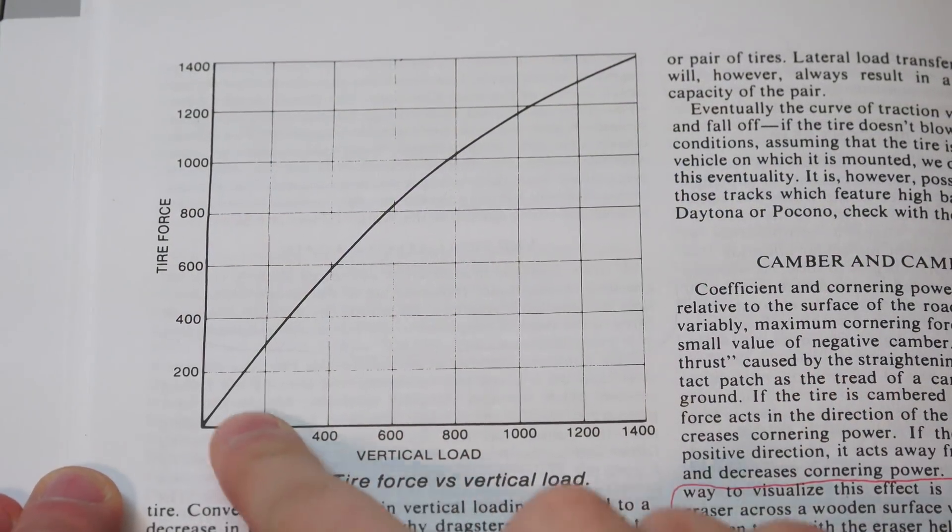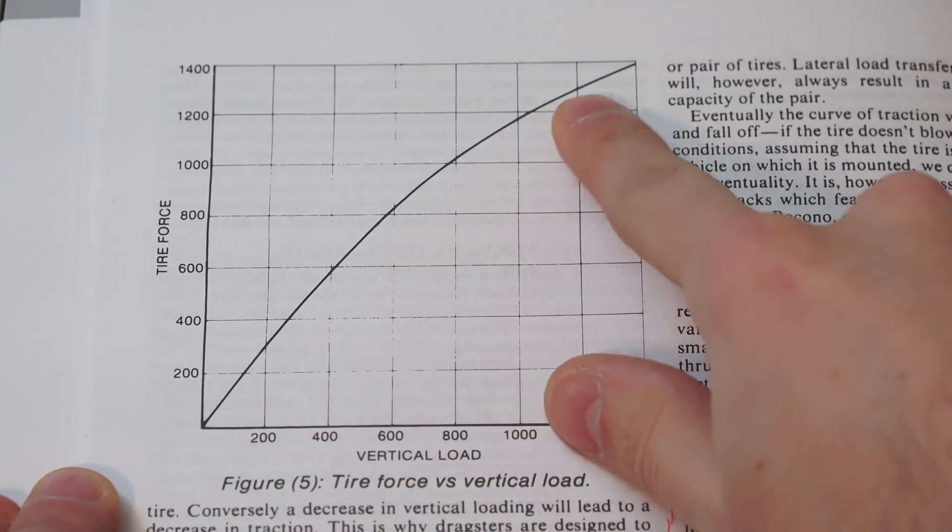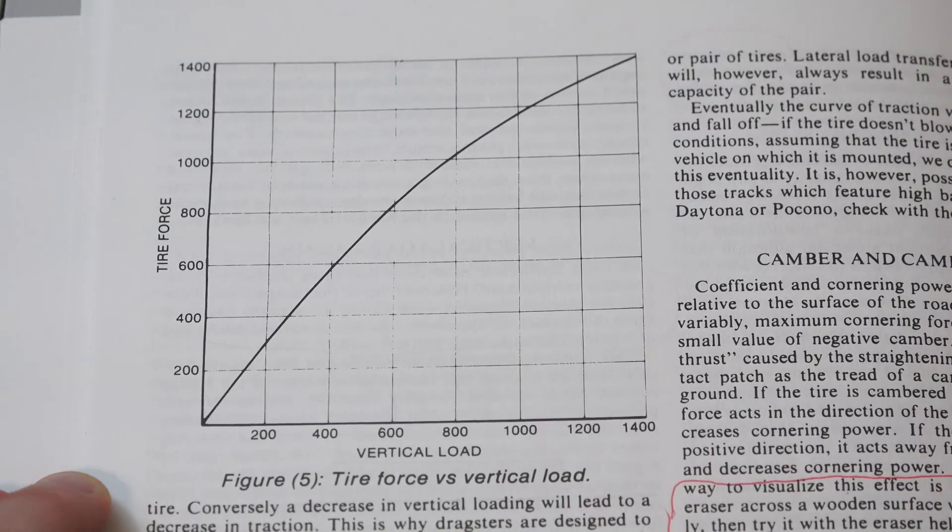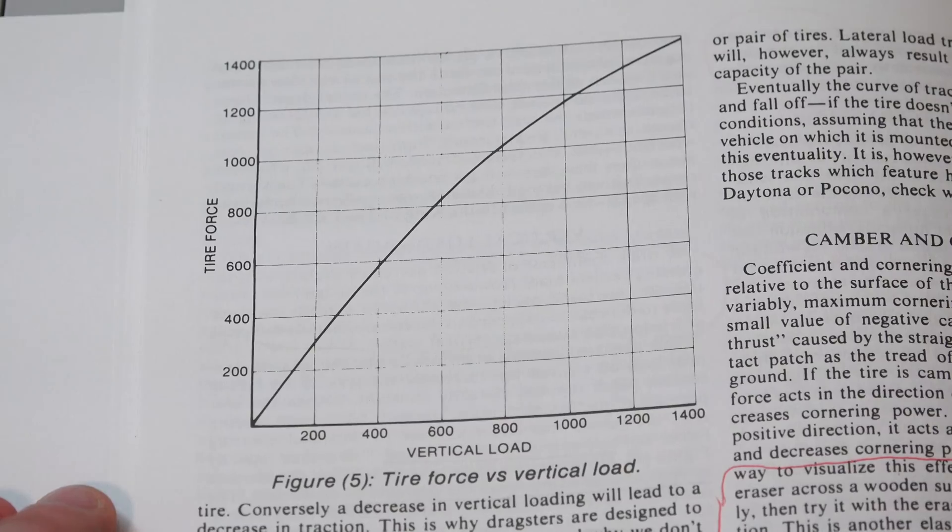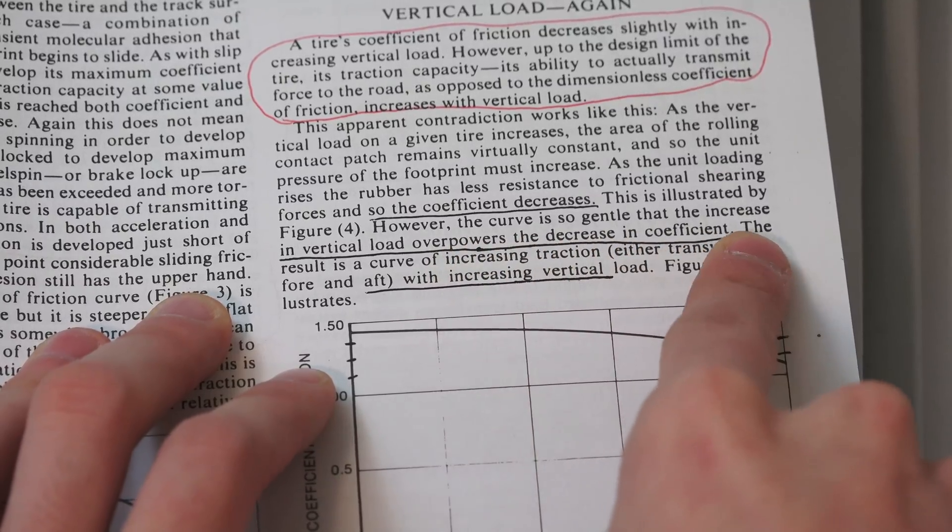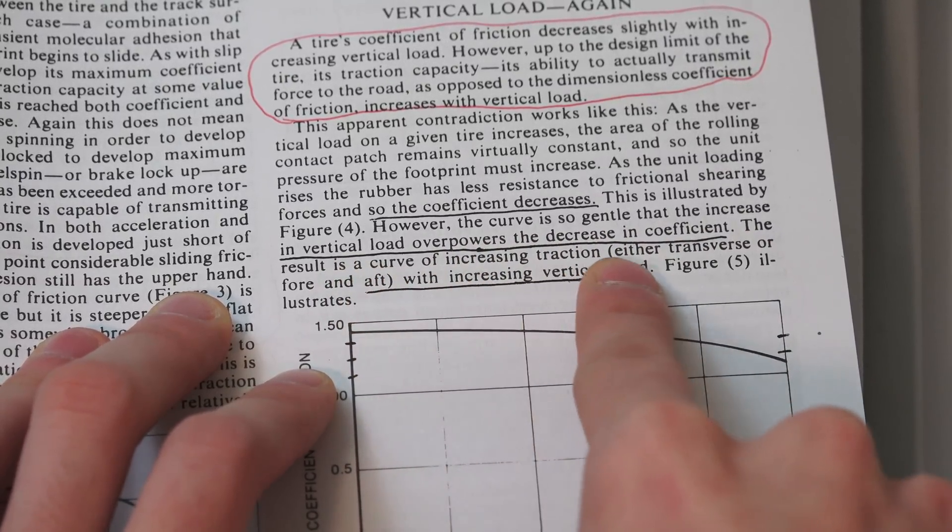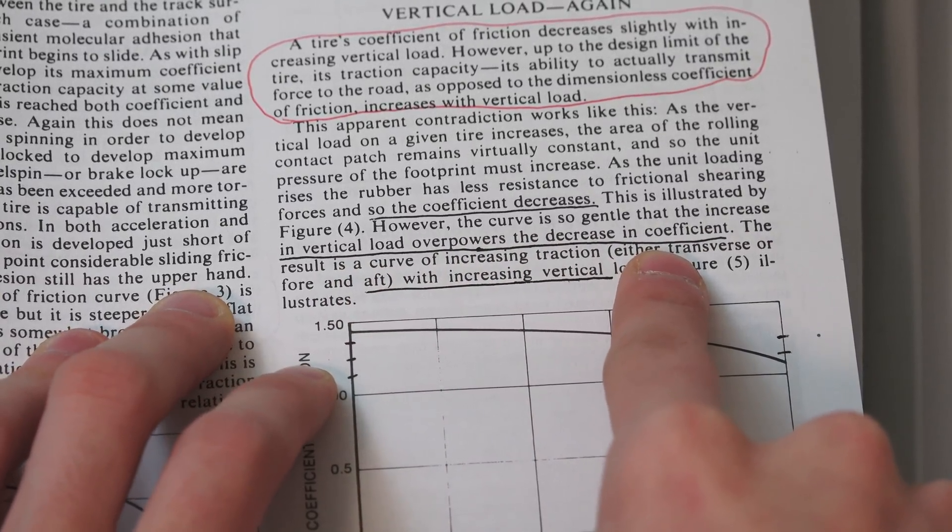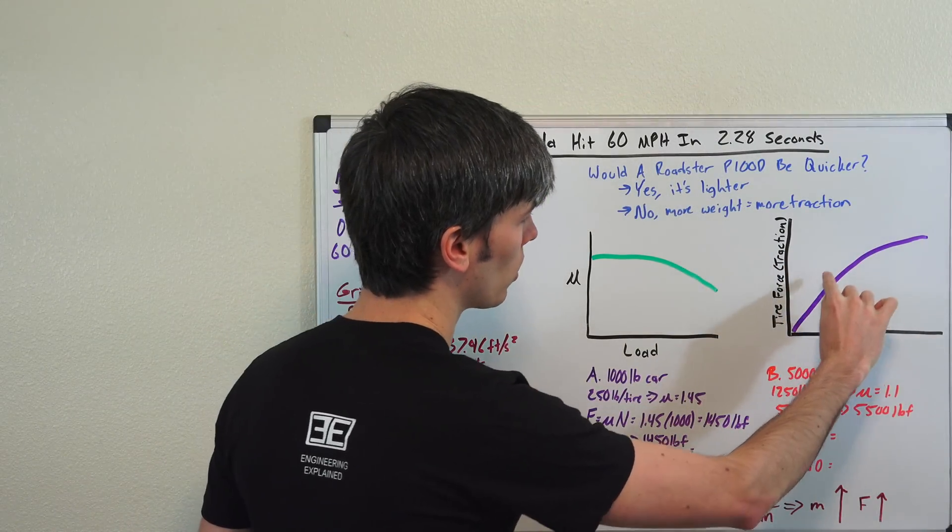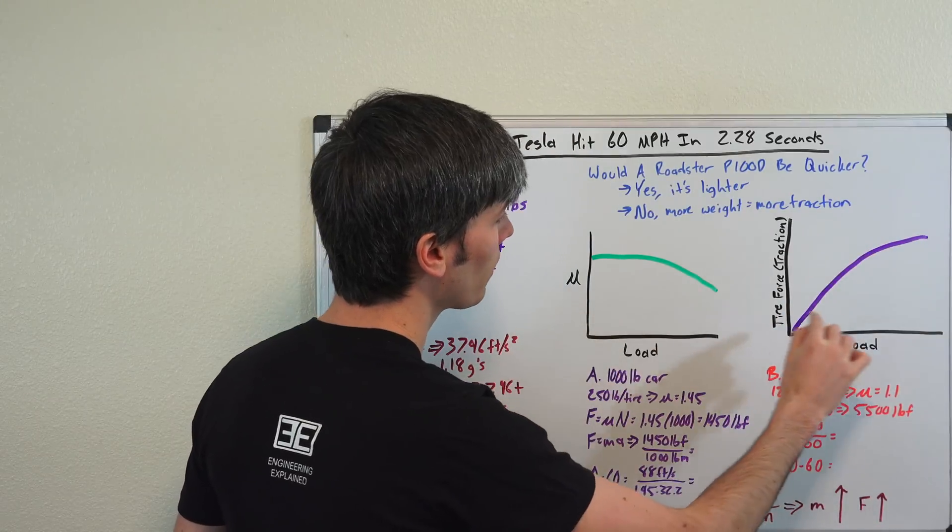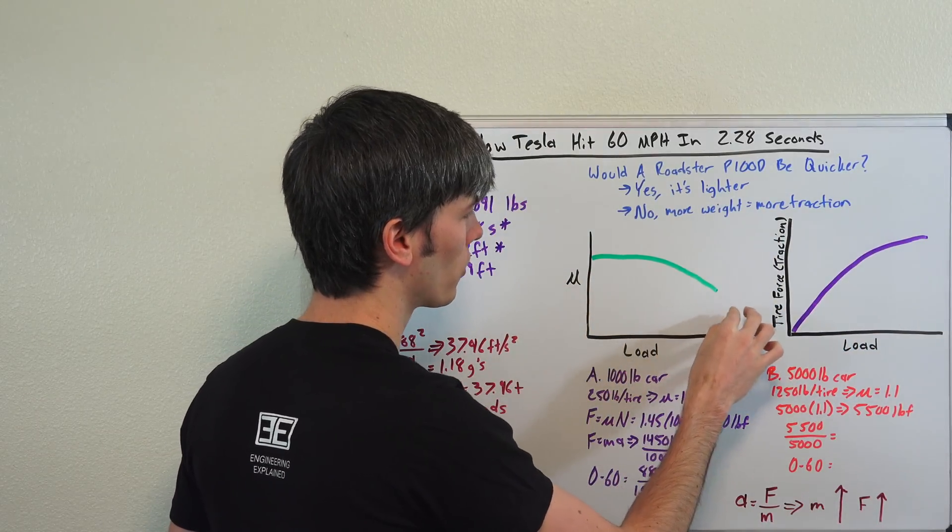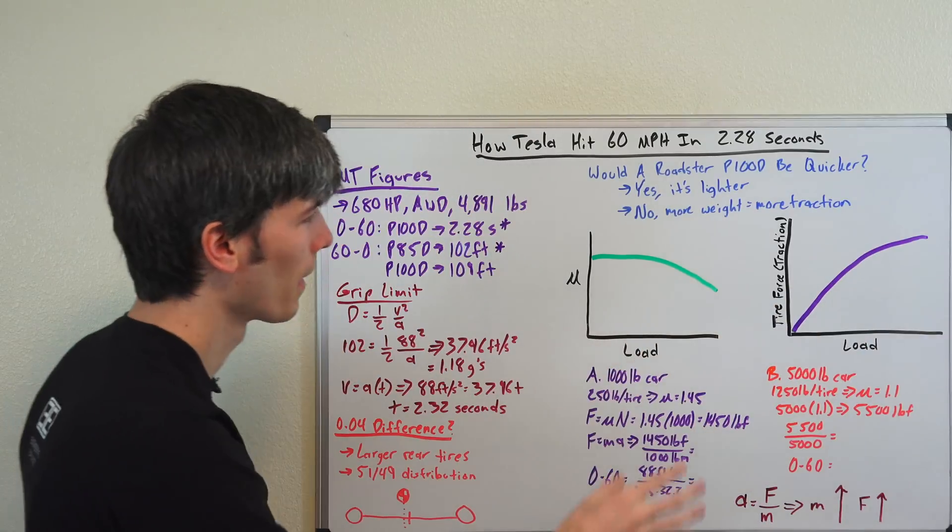So what this is saying is that as you increase weight you're decreasing the amount of grip that that tire has. However, there is also a graph in this book that shows that as you increase vertical load on the tire, the amount of force that the tire can apply to the ground increases. So traction is increasing with an increase in vertical load. Now the sentence that Smith says in this book which I think confuses a lot of people is he says the curve is so gentle that the increase in vertical load overpowers the decrease in coefficient. And so if you're looking at this graph here the vertical load increases and the amount of traction that the tire has increases even though your coefficient of friction is going down.